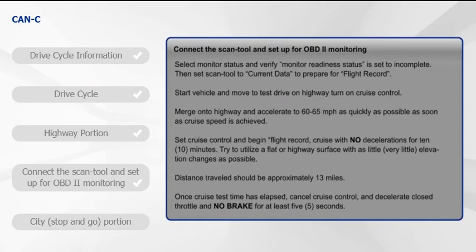Connect the scan tool and set up for OBD2 monitor. Select monitor status and verify readiness status is set to incomplete, then set the scan tool to current data to prepare for the flight record. Start the vehicle and move to the test drive on the highway. Turn on cruise control, merge onto the highway, and accelerate to 60 to 65 miles per hour as quickly as possible. Once cruise speed is achieved, set cruise control and begin the flight record. Cruise with no decelerations for 10 minutes, trying to utilize a flat highway surface with as little elevation change as possible. Distance traveled should be approximately 13 miles. Once cruise test time has elapsed, cancel cruise control and decelerate with closed throttle and no brake for at least five seconds.